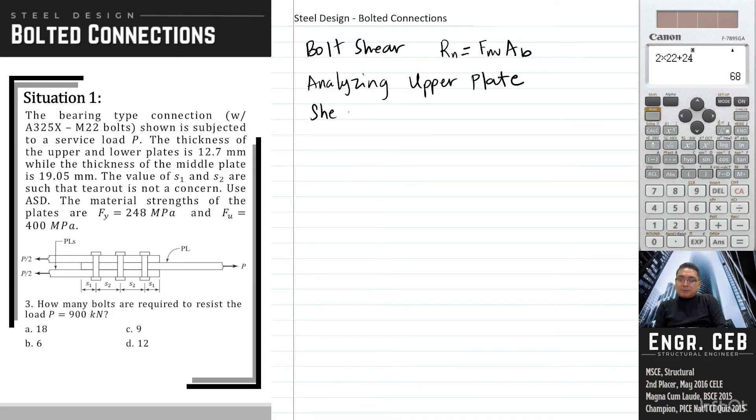So let us now solve for the capacity of one bolt in shear. So we have Rn equals Fnv 469. And then the area of the bolt is simply pi over 4 times 22 squared. So we only use one area of the bolt because the bolts in the upper plate are subjected to single shear. So let us compute for this one. So Rn equals 178282.2415 N.